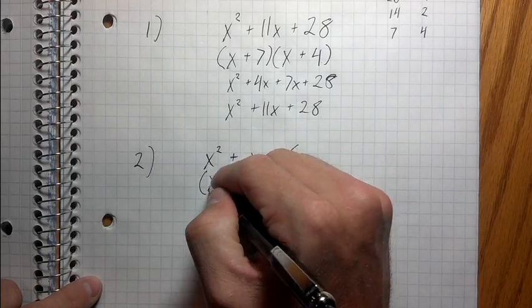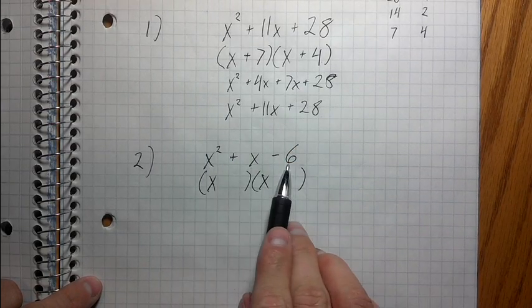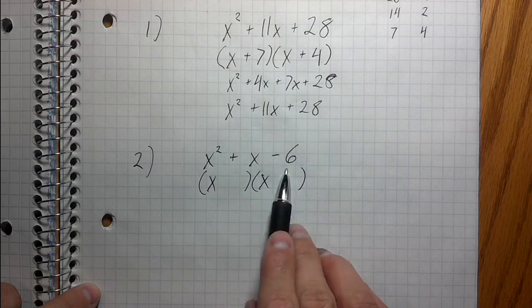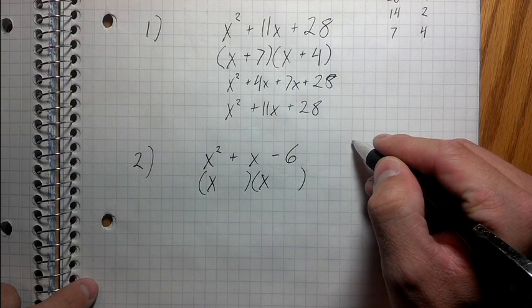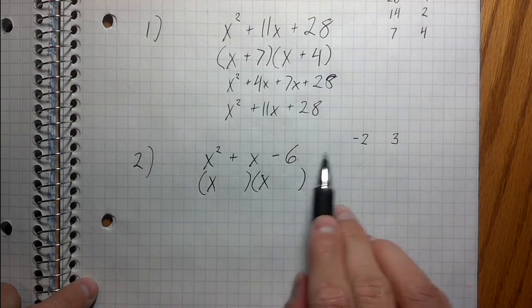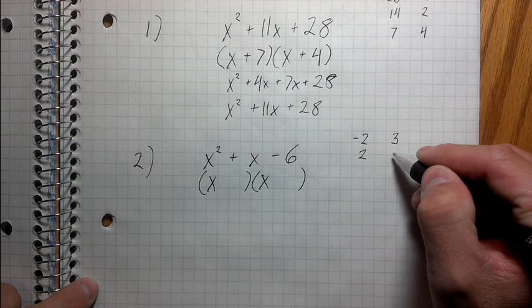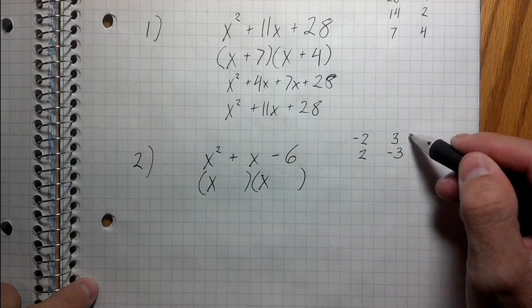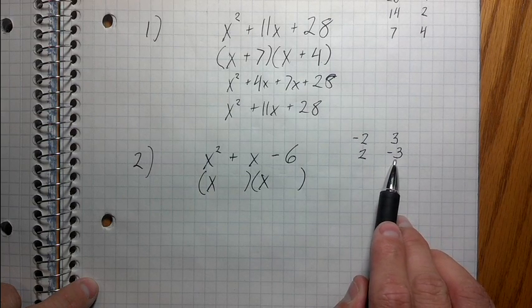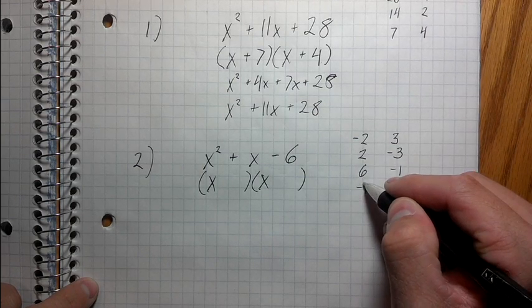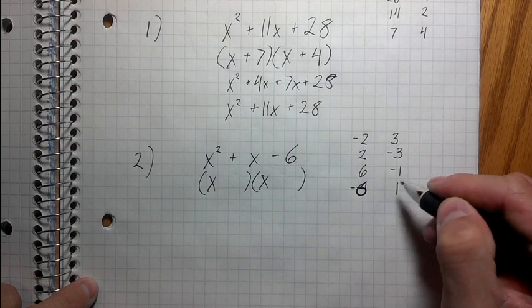The process is the same — I put an x and an x because these are the factors of the first term. Now I need to think of all the possible pairs of factors of the last term. This is where it gets a little tricky — this is a negative 6. So I need to think about things that actually multiply to make a negative 6. Negative 2 times positive 3 gives a negative 6, and positive 2 times negative 3 also gives a negative 6. Then there's negative 6 and positive 1.